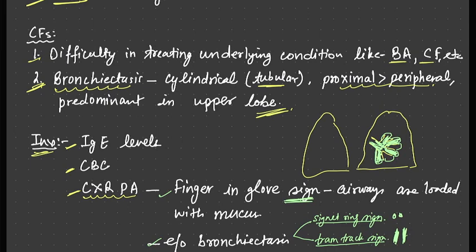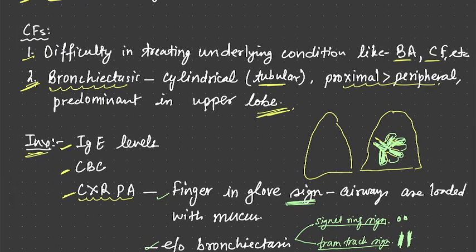Risk factors are bronchial asthma, cystic fibrosis, chronic granulomatous disease. Difficulty in treating underlying conditions are the clinical features. For example, bronchial asthma which is not controlled on regular medications. That may point towards allergic bronchopulmonary aspergillosis. Second is the bronchiectasis.